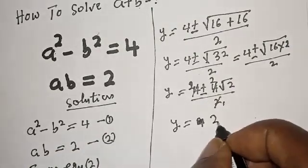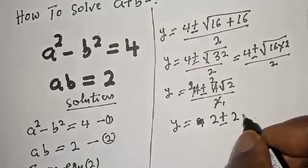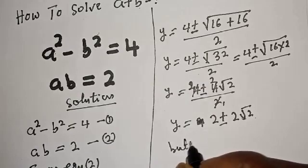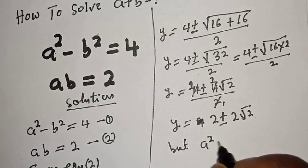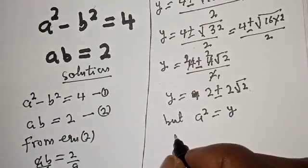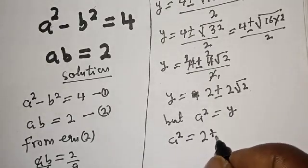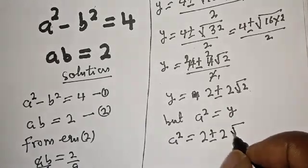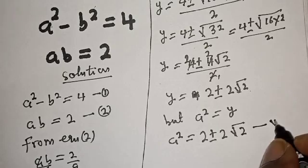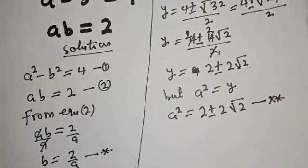Simplifying further, y equals 4 plus or minus 4 root 2, all over 2, which gives y equals 2 plus or minus 2 root 2. Since a squared equals y, we have a squared equals 2 plus or minus 2 root 2. Let's call this equation star star.